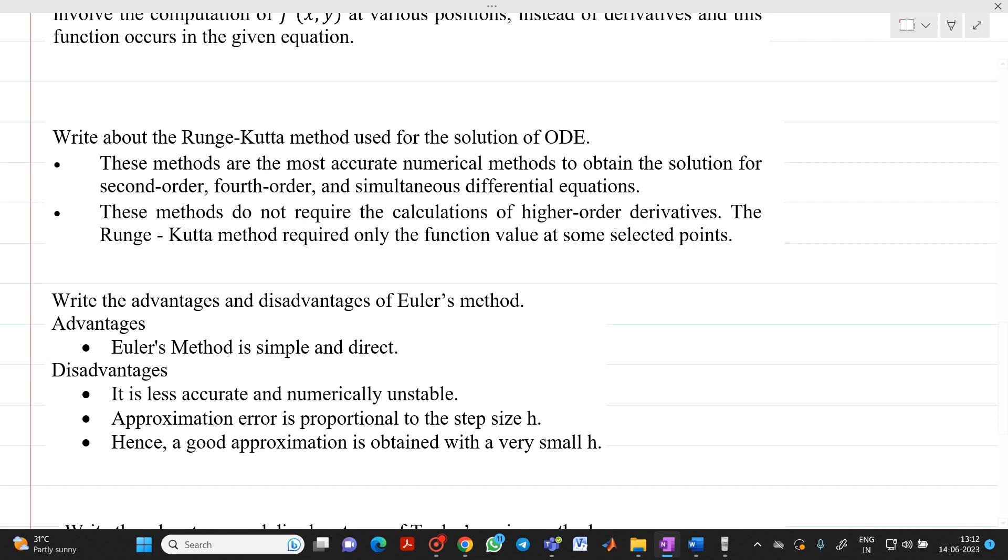Euler's method is very simple and direct because the formula is easy: y₁ equals y₀ plus h into f of x₀ comma y₀. It is a single line formula, very easy formula. One can remember it and just substitute whatever will be a complicated function, just substitute your initial value that is x₀ and y₀. But